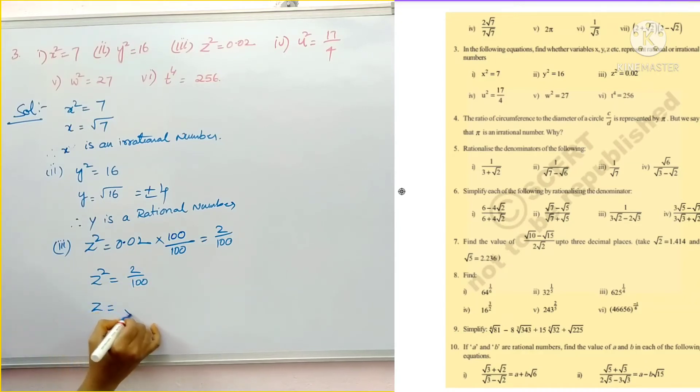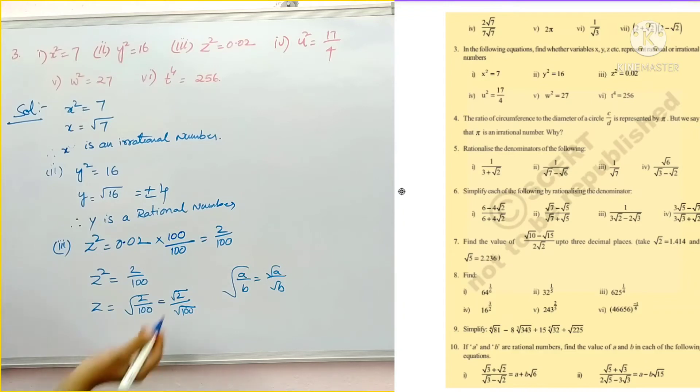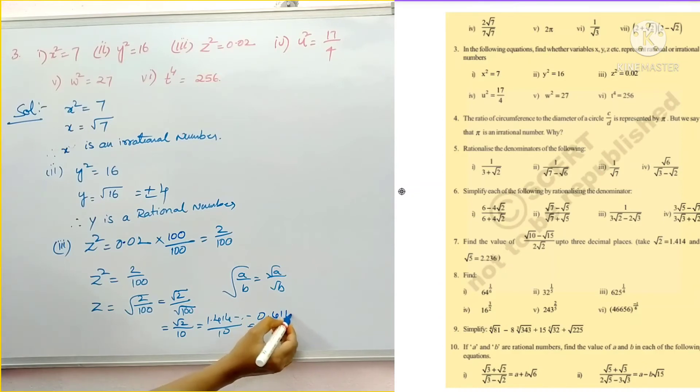So z square is equal to 2 by 100. Then z equal to square root of 2 by 100. So square root of a by b means this is root a by root b. So root 2 by root 100. Value of root 100? 10 tenths of 100. So this is root 2 by 10. Value of root 2, 1.414 and so on by 10. So then this will become 0.414 and so on. So this is non-terminating and non-recurring.